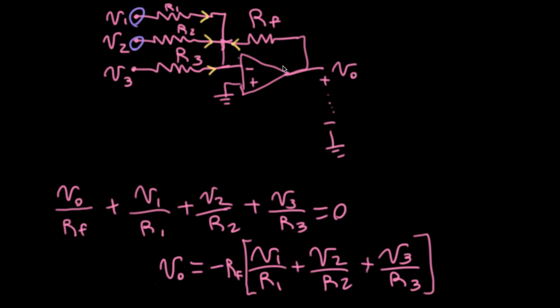Here it doesn't matter. I can actually connect V1 and V2 and leave 3 disconnected, and that essentially would be the same as grounding V3. Whether this term is zero because we're actually putting in a zero voltage for V3, or whether this term is zero because we just leave it disconnected altogether, it doesn't matter. It doesn't affect these other terms.